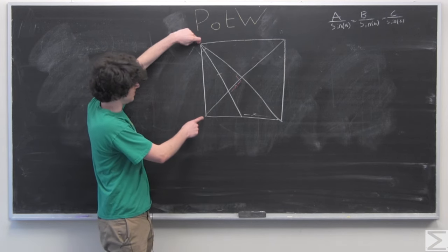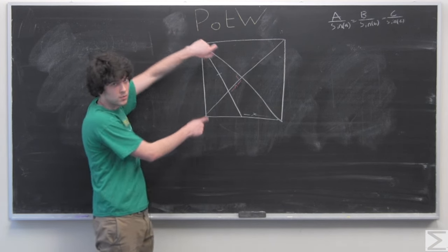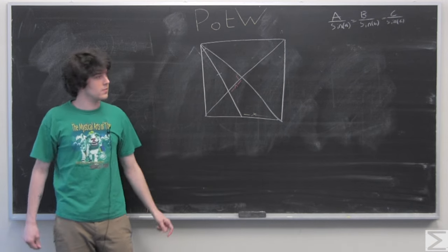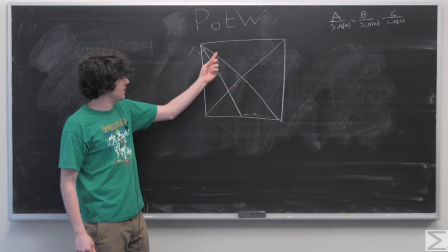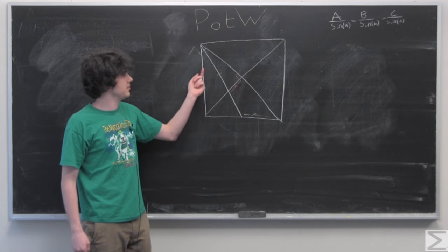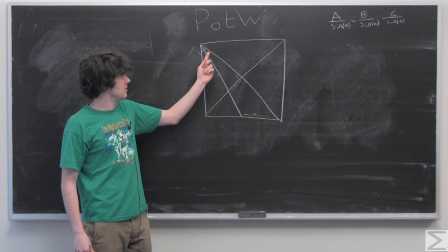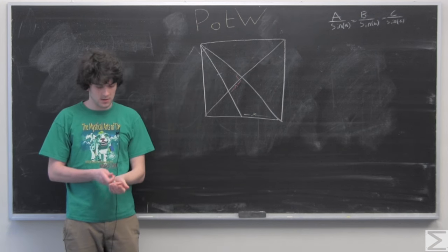Meaning by the law of sines that these two angles will be the same. And you can use that to find out that this big angle is 45 degrees, and the little angle here is 22.5 degrees.